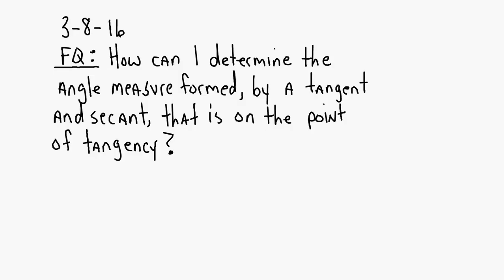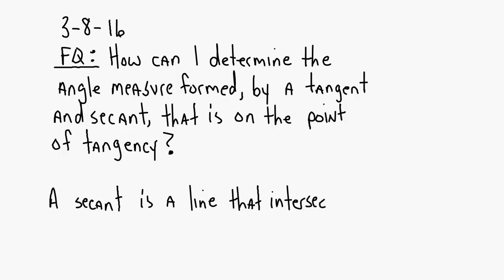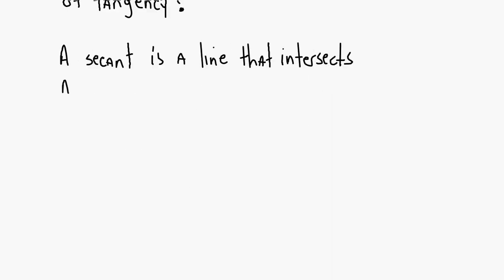Who remembers what a tangent is? It's the line that intersects one point on the circle — exactly one point on the circle, right? A line intersects a circle at exactly one point. So a secant is a line that intersects a circle at exactly two points.